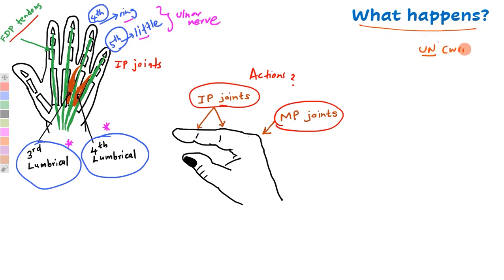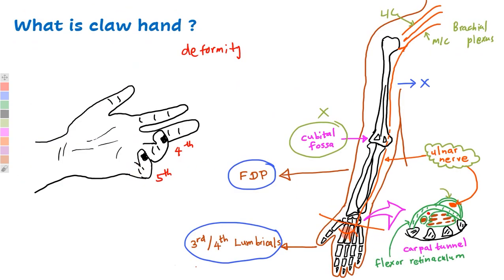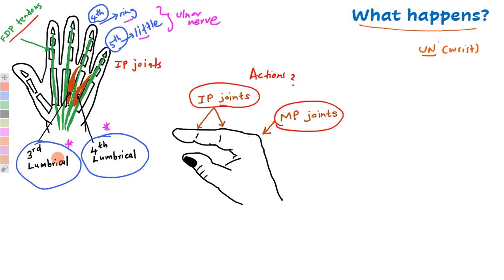What happens in claw hand? When the ulnar nerve is damaged at the wrist, it cuts off the nerve supply to the lumbricals. The third and fourth lumbricals become paralyzed, so their actions are lost — metacarpophalangeal joint flexion and interphalangeal joint extension of the ring finger and little finger will be impaired.